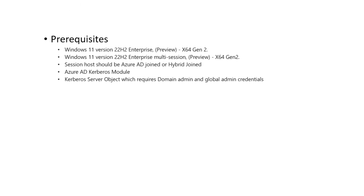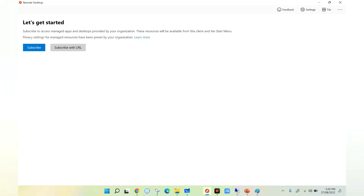The session host should be Windows 11 version 22H2 Enterprise preview or Windows 11 version 22H2 Enterprise multi-session preview. We need the session host to be Azure AD joined or hybrid AD joined. Then we need to have the Kerberos AD module installed on any VM which is joined to the domain, and we need to create a Kerberos server object which requires domain admin and global admin credentials. This Kerberos server object will help achieve single sign-on.